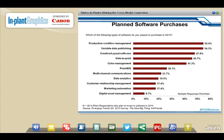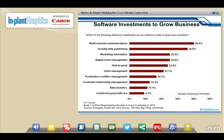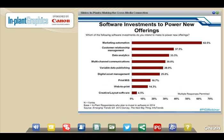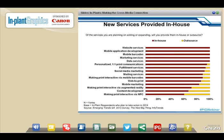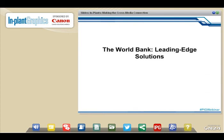We also asked which software investments they looked at for overall business growth. The number one investment was multi-channel communications, followed by variable data and automating marketing. For powering new offerings, they said they planned to buy tools for marketing operations, customer relationship management, and better data management. Notably, a lot of these new services they're looking at offering, they're planning to bring in-house.